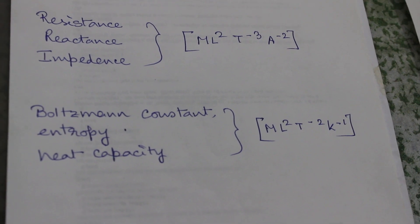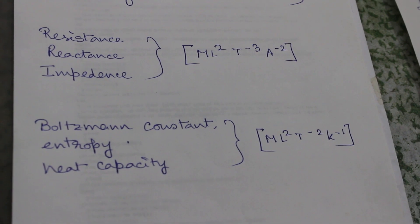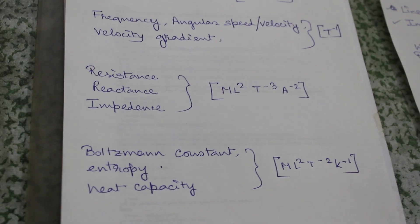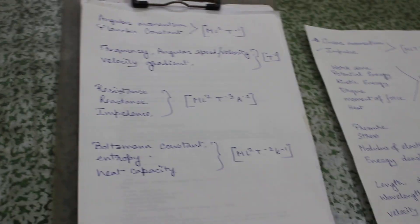Last is Boltzmann constant (k_B), entropy, and heat capacity. Their dimension is ML² T⁻² K⁻¹.